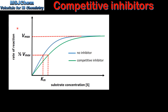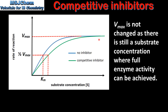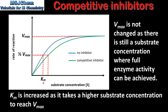Next we look at the effect of a competitive inhibitor on the value of Vmax and the Michaelis constant Km. In this graph the blue curve represents the rate of reaction of an enzyme with no inhibitor, and the green curve represents the rate of reaction with a competitive inhibitor. The value of Vmax is not changed, as there is still a substrate concentration where full enzyme activity can be achieved. The value of Km is increased, as it takes a higher substrate concentration to reach Vmax.